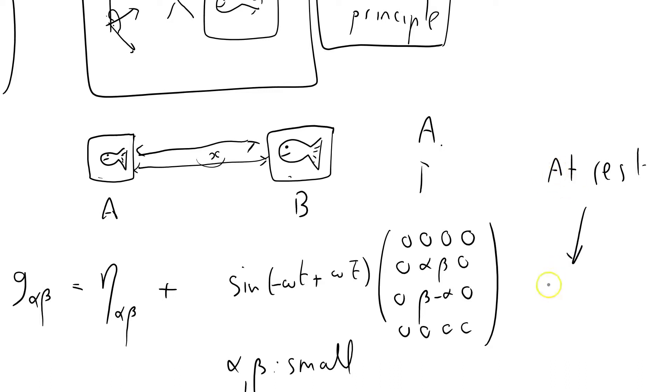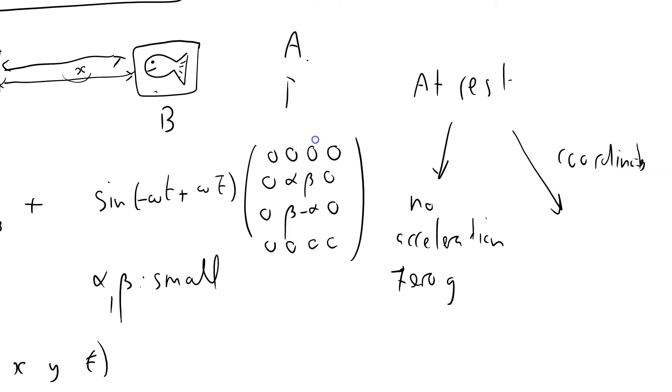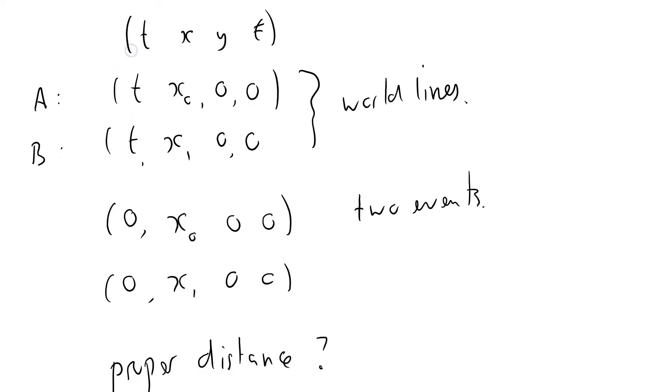What's going on physically here is that both fish tanks are at rest in two senses. Firstly, there's no acceleration. The fish are undisturbed, not sloshing about. They're sitting in free fall, zero G. They're also at rest in terms of coordinates. Their Y and Z are not changing. They are at rest in the coordinate system we have chosen. Their four velocity is that of a body at rest.